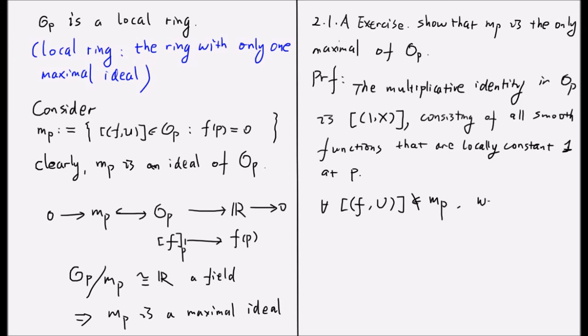we know by definition, f(p) is not zero. So f is not zero in a neighborhood of p. Without loss of generality, we assume this neighborhood of p to be just the open subset U as in the representative of this equivalence class.